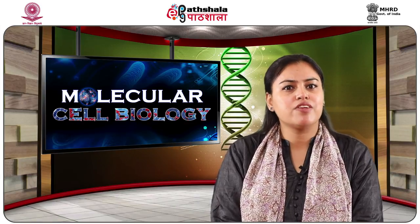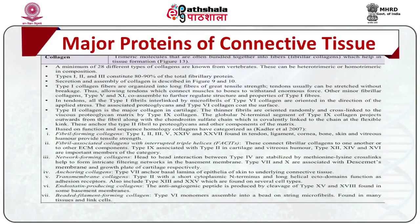Considering the major proteins of connective tissue: types I, II and III collagens constitute nearly 80–90% of the total fibrillary protein. Type I collagen fibers are organized into long fibers of great tensile strength, allowing tendons to connect muscles to bones and withstand enormous force without breakage. Other minor fibrillar collagens, types V and XI, co-assemble to further regulate the structure and properties of type I fibers. In tendons, all type I fibers are interlinked by microfibers of type VI collagen and oriented in the direction of applied stress.